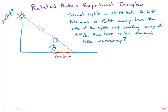This is another very common type of related rates problem, proportional triangles. So suppose there's a street light and it is 24 feet tall and a man who is 6 feet tall is 15 feet away from the light and he's walking away from it at 3 feet per second.